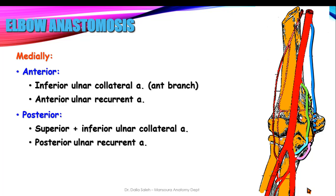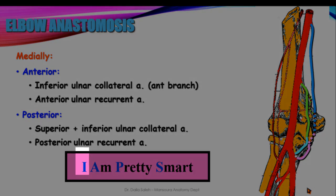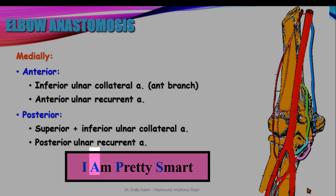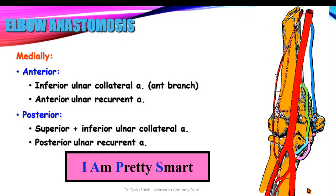We can remember the medially placed anastomosis by a mnemonic. Anterior to the medial epicondyle, the inferior ulnar collateral artery anastomoses with the anterior ulnar recurrent. Posterior to the medial epicondyle, the posterior ulnar recurrent anastomoses with the superior ulnar collateral branch.